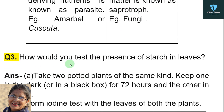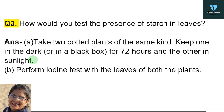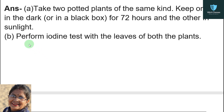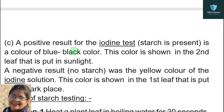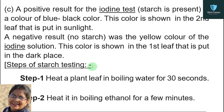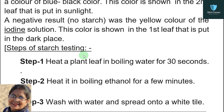Question number three: how would you test the presence of starch in leaves? First, take two potted plants of the same kind — keep one in the dark for 72 hours and the other in sunlight. Second, perform iodine tests with the leaves of both plants. Third, a positive result for the iodine test is a blue-black color, shown in the leaf kept in sunlight. A negative result gives a yellow color of the iodine solution, shown in the leaf kept in the dark.